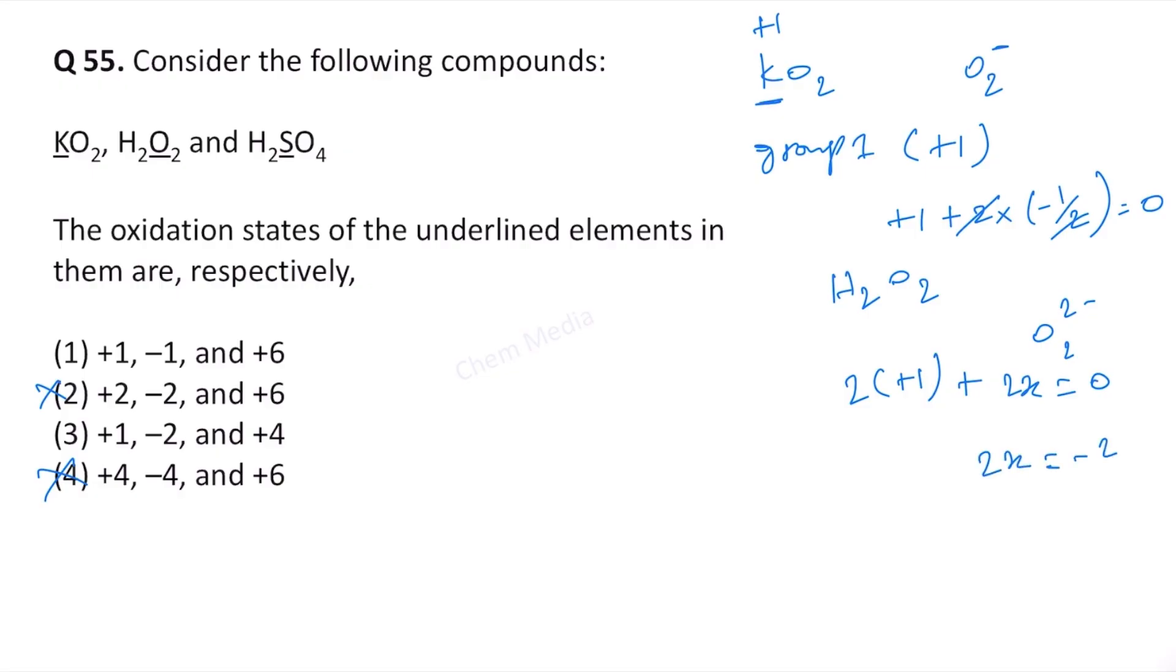Therefore, 2x equals minus 2. This means that x equals minus 1. So for oxygen, the oxidation state in hydrogen peroxide is minus 1. This means option 1 is the only correct choice here.